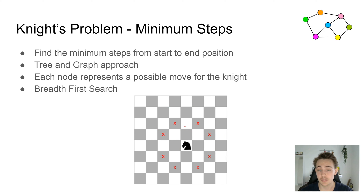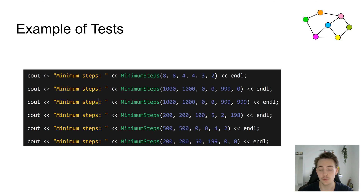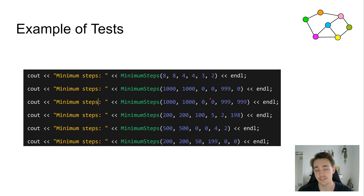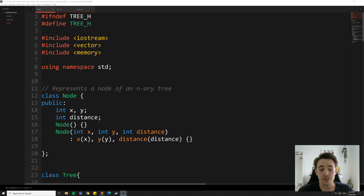We generate the possible steps the knight needs to take to reach a goal set in the function. The test uses a function that returns the minimum steps, where we do the breadth-first search and insert the different possible moves for the knight. We give it a start position and an end position, run a lot of different tests, and see how it finds the minimum number of steps from start to end goal.